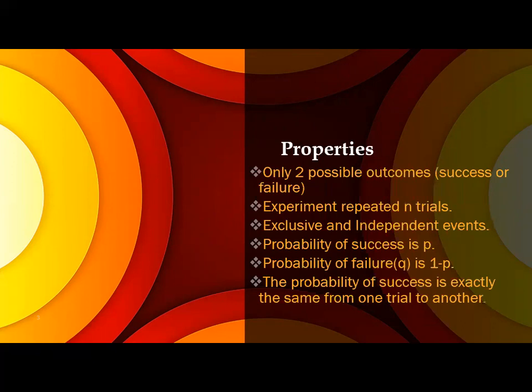If you take any experiment or any random variable, it will have only two possible outcomes: success and failure. Next one: experiment repeated n trials. It's not a one-time experiment; you will repeat that for n trials.